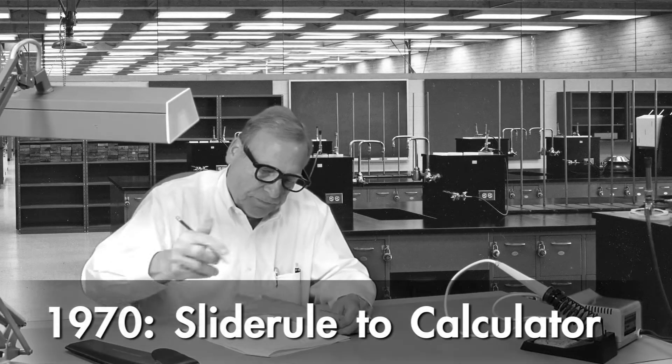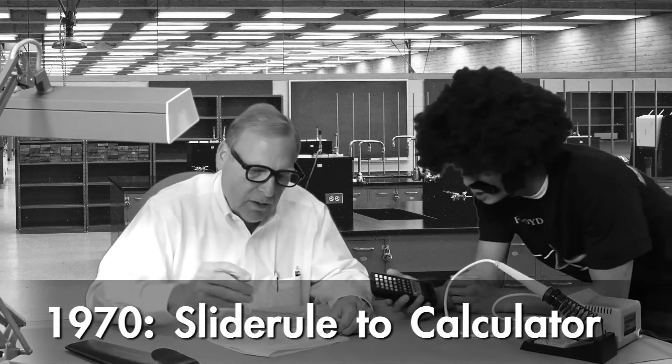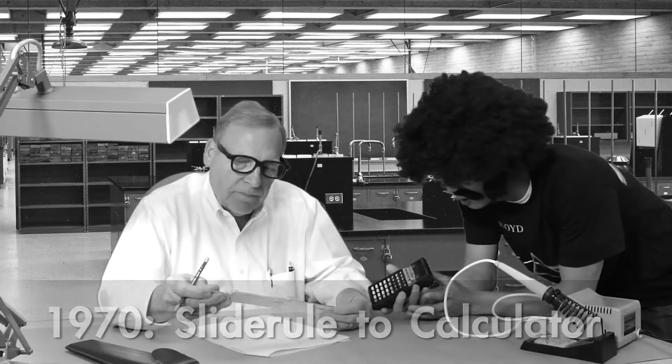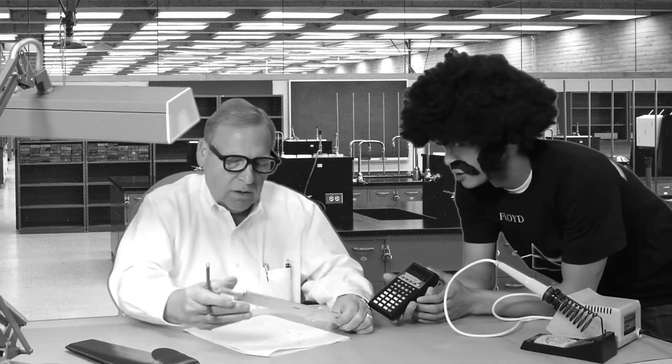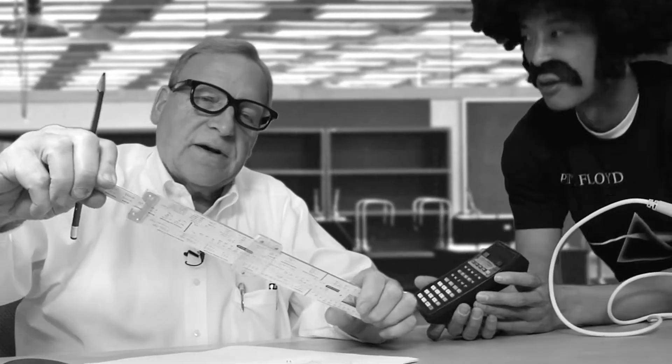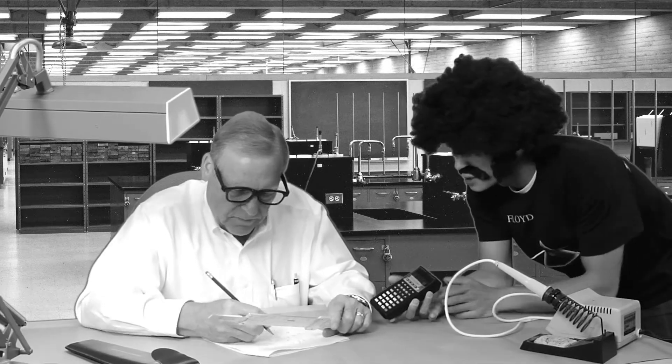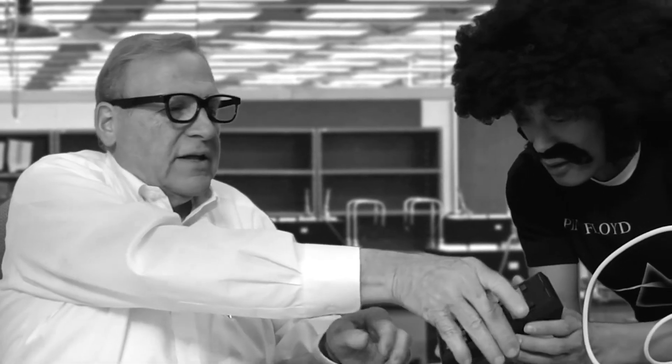In the 1970s, the slide rule goes the way of the dinosaurs. 'Wow, check out this new scientific calculator I got.' 'Not interested.' 'You can multiply, divide and calculate square roots.' 'Well, I got that covered right here.' 'It's got trig functions and you can calculate pi to the sixth digit.' 'Oh. Well, I think I'll try that out.'